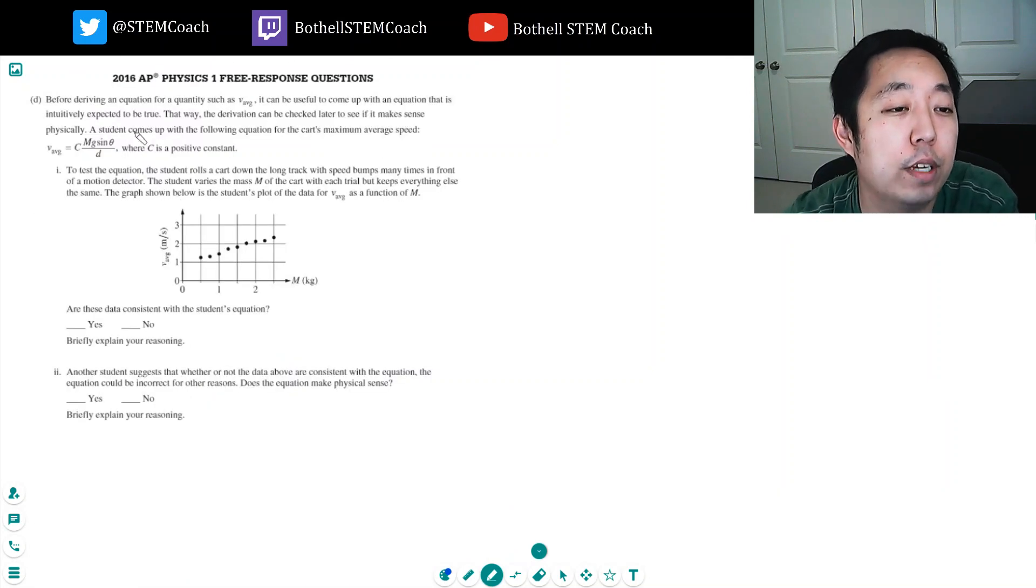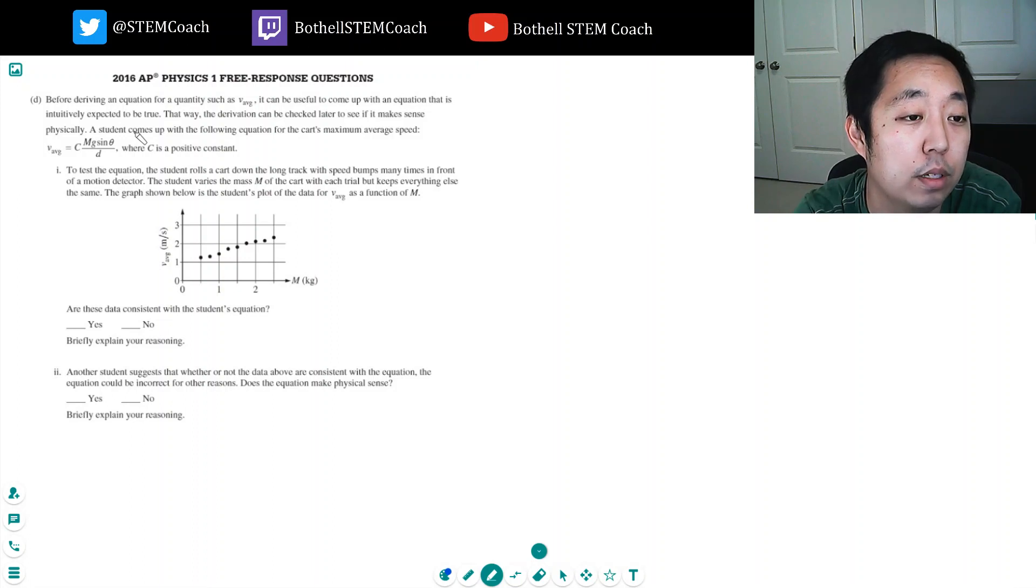Part D: Before deriving an equation for a quantity such as v average, it can be useful to come up with an equation that is intuitively expected to be true. That way the derivation can be checked later to see if it makes sense physically. A student comes up with the following equation for the cart's maximum average speed. To test the equation, the student rolls a cart down the long track with speed bumps many times in front of a motion detector. The student varies the mass m of the cart with each trial but keeps everything else the same.